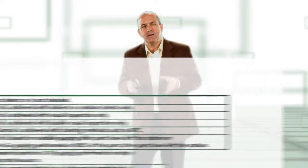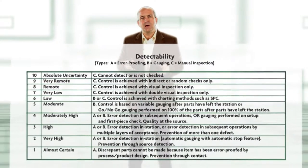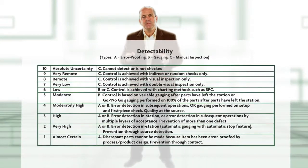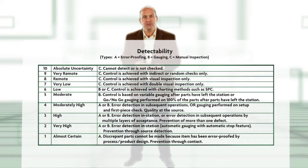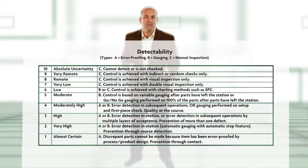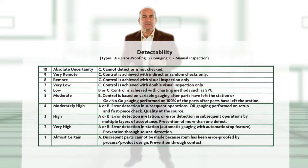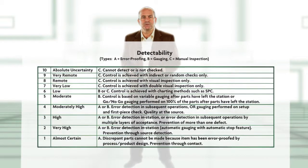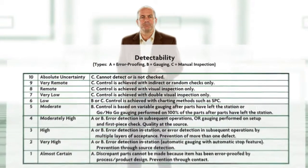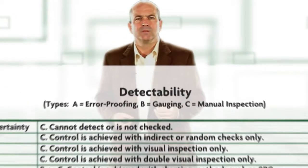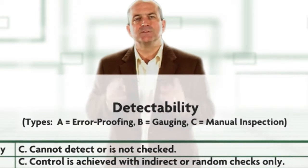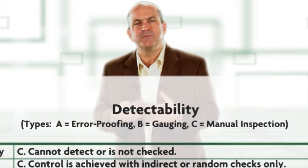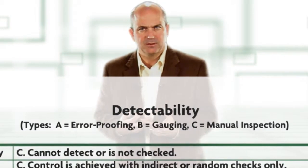Here is an example of the detectability rating scale as published by the AIAG and modified to include lean and mistake proofing terms. We see at the very top of this form that there are three types of detectability.